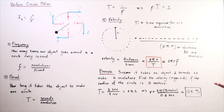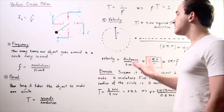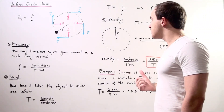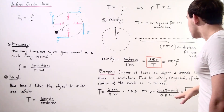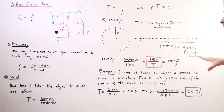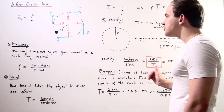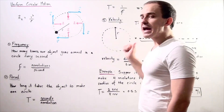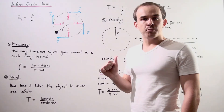That gives approximately 37 meters per second as the speed of the object moving in the circle. Note that this is the magnitude of velocity; the direction of velocity is always tangent to the circle at that point.